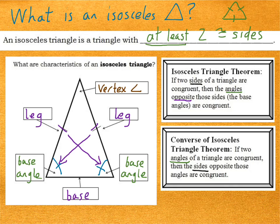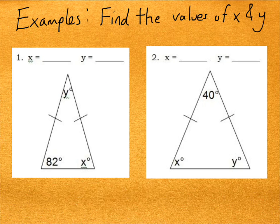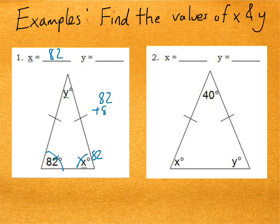Let's apply this to a couple of examples where we'll find the values of x and y. In example one, x is another base angle, so it has to be congruent to the other. Therefore the value of x must be 82. To find the value of y, the sum of the angles has to be 180. So if I add 82 and 82, that gives me 164, and if I subtract 164 from 180, that gives me 16. So y is 16 degrees.